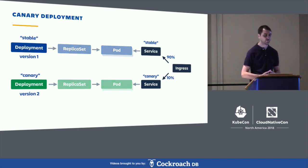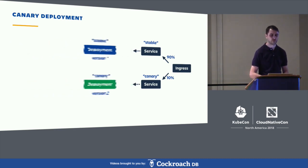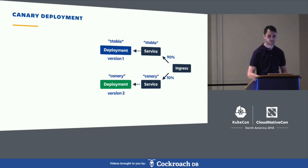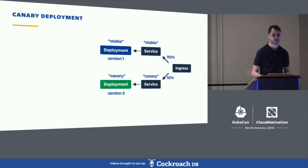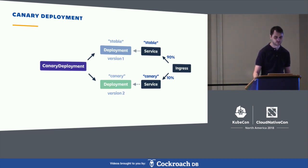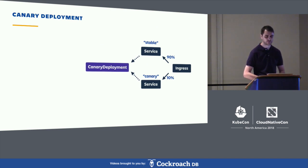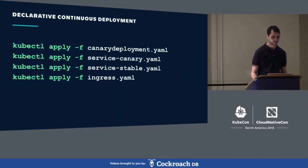Going back to the canary deployment picture to see what we need to automate: let's forget about replica sets and pods, since they are managed by the deployment controller. The objects we need to manage for our canary deployment controller are the deployment objects. Service and ingress objects are effectively static — we just apply them once and don't need to update them every time we have a new version. So we only need to manage deployment objects, and this is where the new CRD comes in.